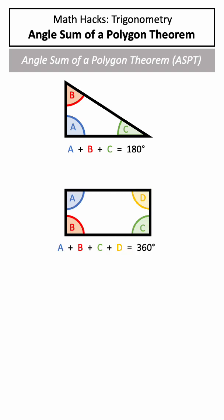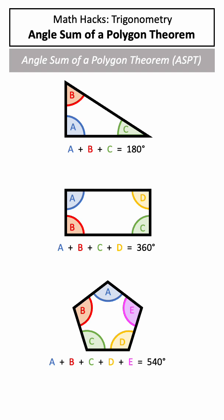So we know the interior angles of a triangle add to 180 degrees, but this theorem can be applied to all polygons. For example, the interior angles of a rectangle add to 360 degrees, and the interior angles of a pentagon add to 540 degrees. You might notice a pattern here.